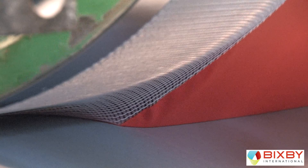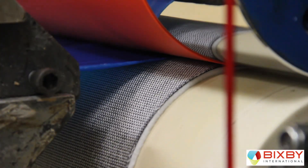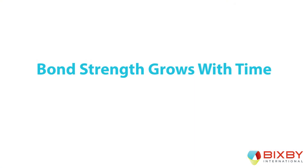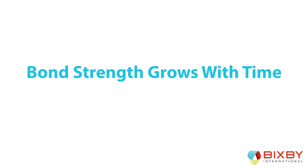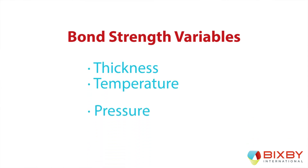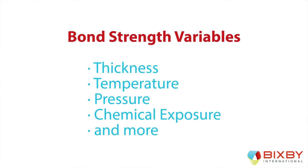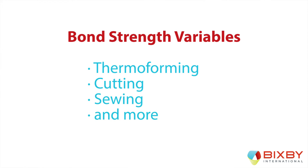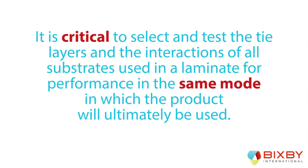The extrusion lamination process and hot melt chemistries are just two components carefully considered by Bixby's R&D team. To deliver innovative product solutions, the team must also ensure these two elements are in sync with the client's end-use processes. Some variables to consider for a good bond in the final application include what happens to the bond after the laminate is made. Bond strength right after processing is usually at its lowest — it grows with time. Variables like thickness, temperature, pressure, and exposure to different chemicals will all affect the bond long-term. Additionally, post-processes such as thermal forming, cutting, and sewing can also compromise ultimate bond strength. It is critical to select and test tie layers and all substrate interactions in the same mode in which the product will ultimately be used.